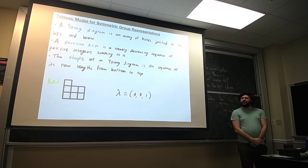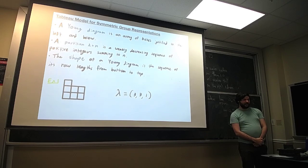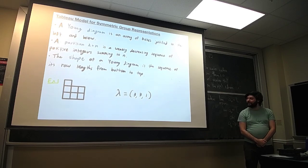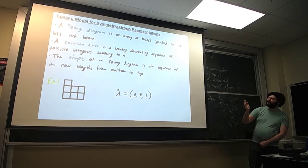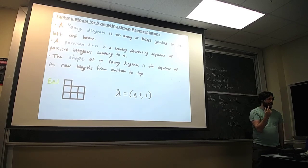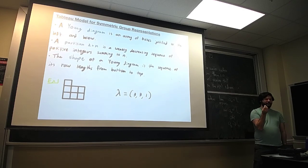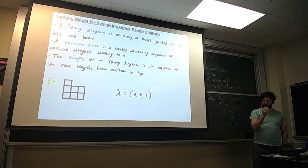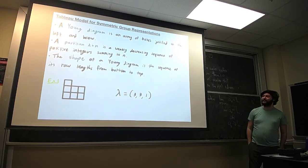That picture is kind of limited, so I need to introduce some new objects. The two ways it's limited are: one, we're going to want very high-dimensional representations, so that picture becomes useless pretty fast. And two, even in that simple situation, we didn't see all of the representations of the group. In order to see all the representations, we're going to construct a slightly different one.